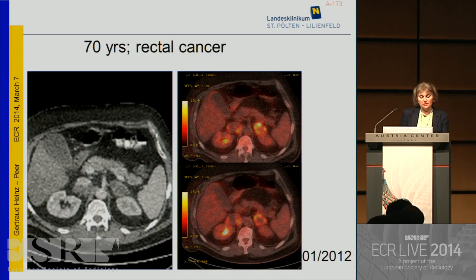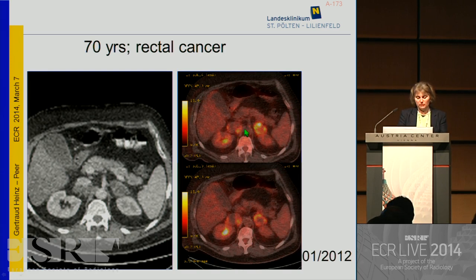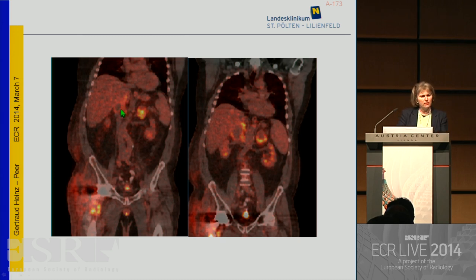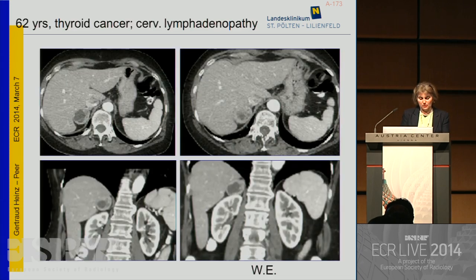In a 70-year-old patient diagnosed with rectal cancer, staging CT revealed bilateral adrenal masses. PET-CT showed increased FDG tracer uptake in both adrenal lesions — on the coronal images there is a lot of tracer uptake, especially in the periphery of the lesions and less in the necrotic areas, clearly indicating the presence of metastasis. This was proven histologically.